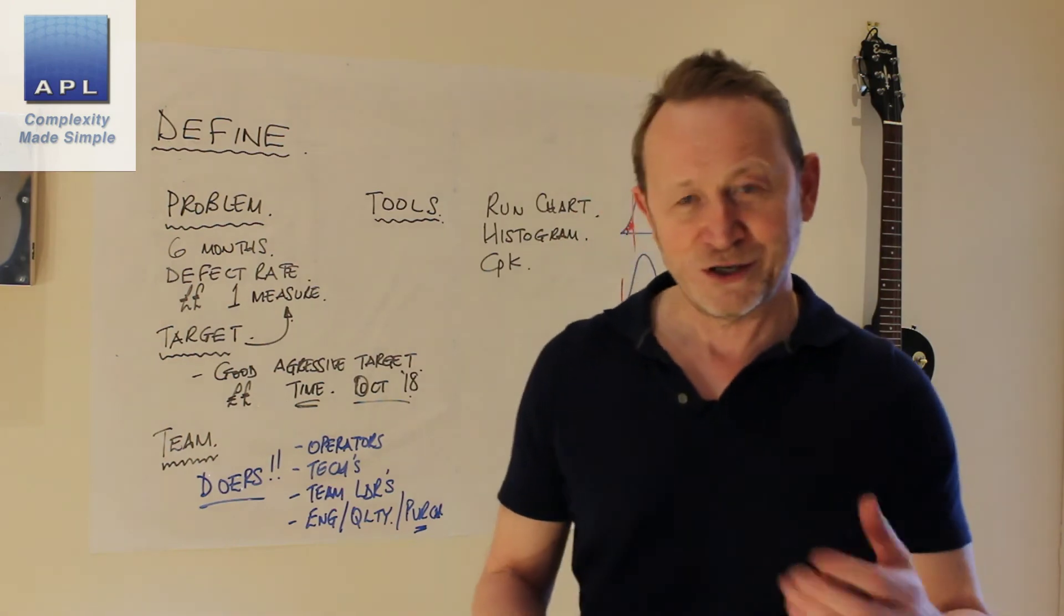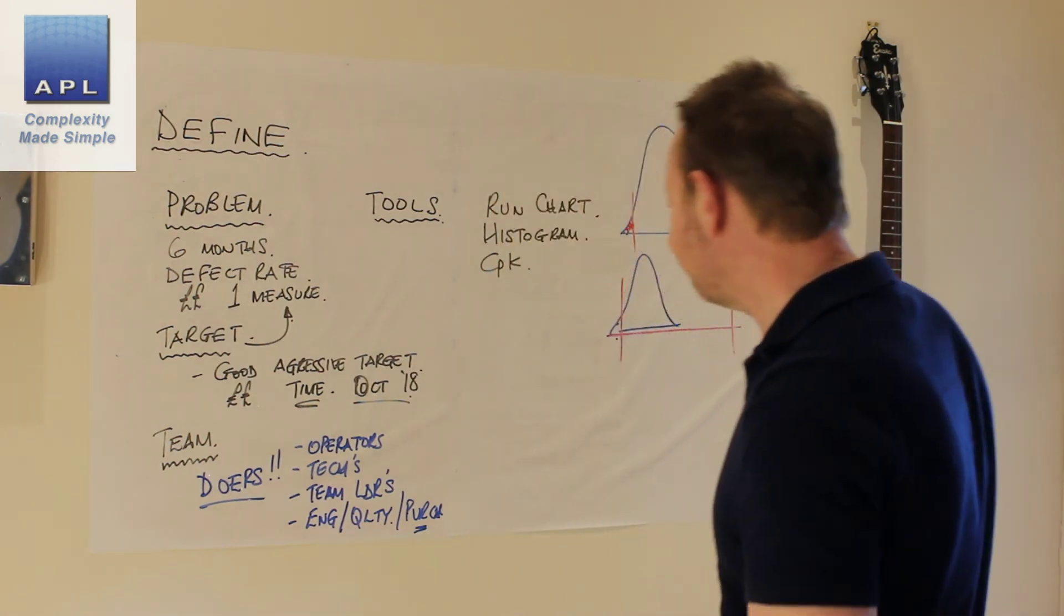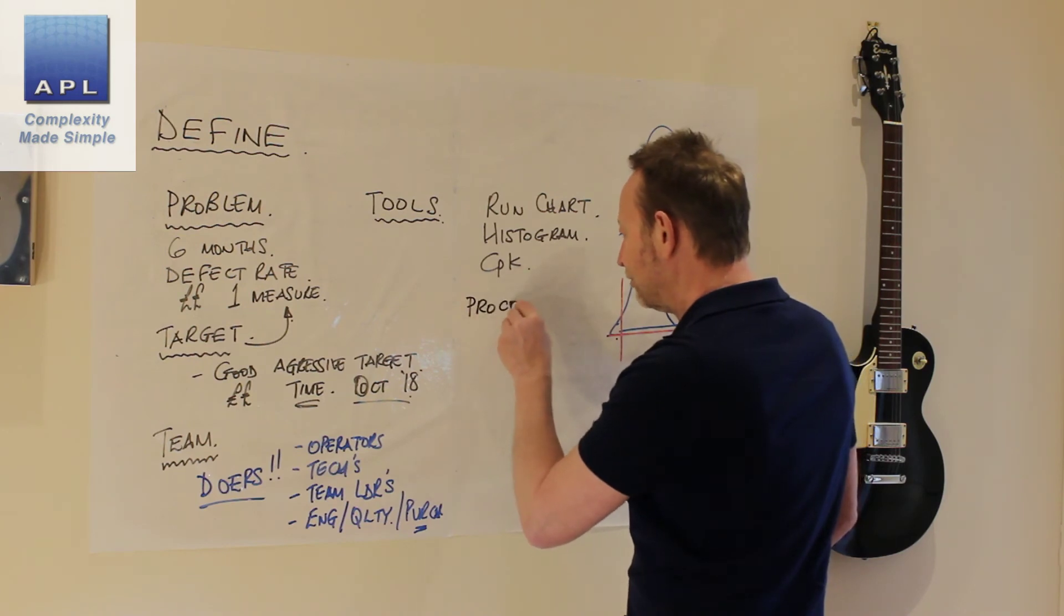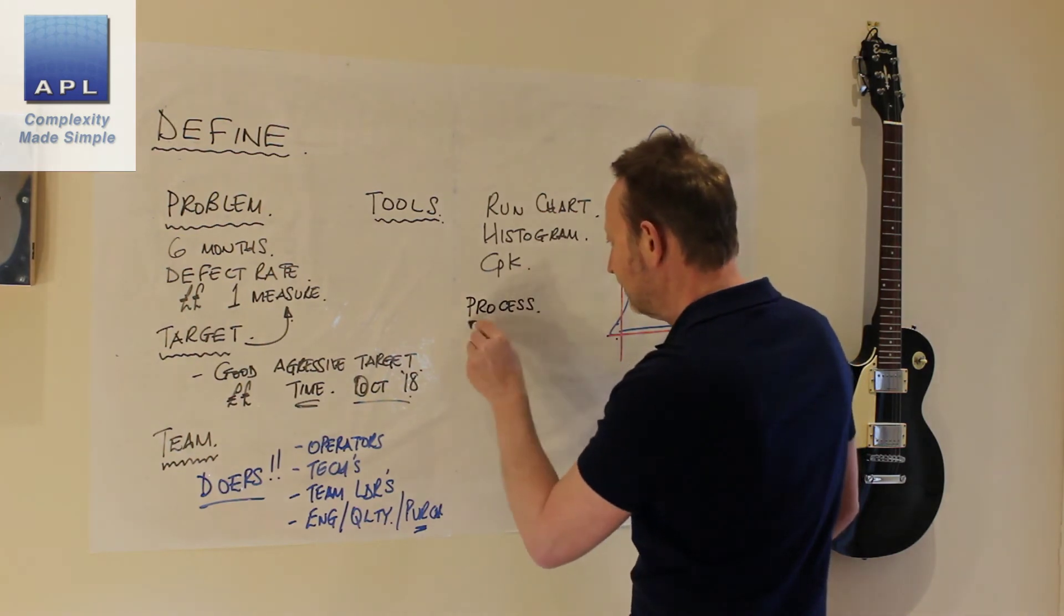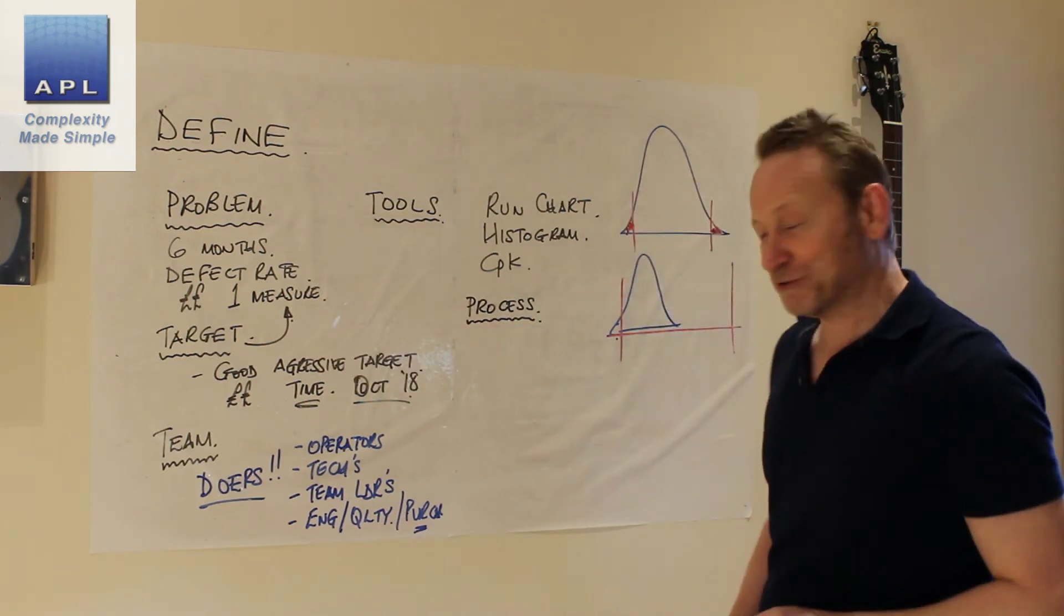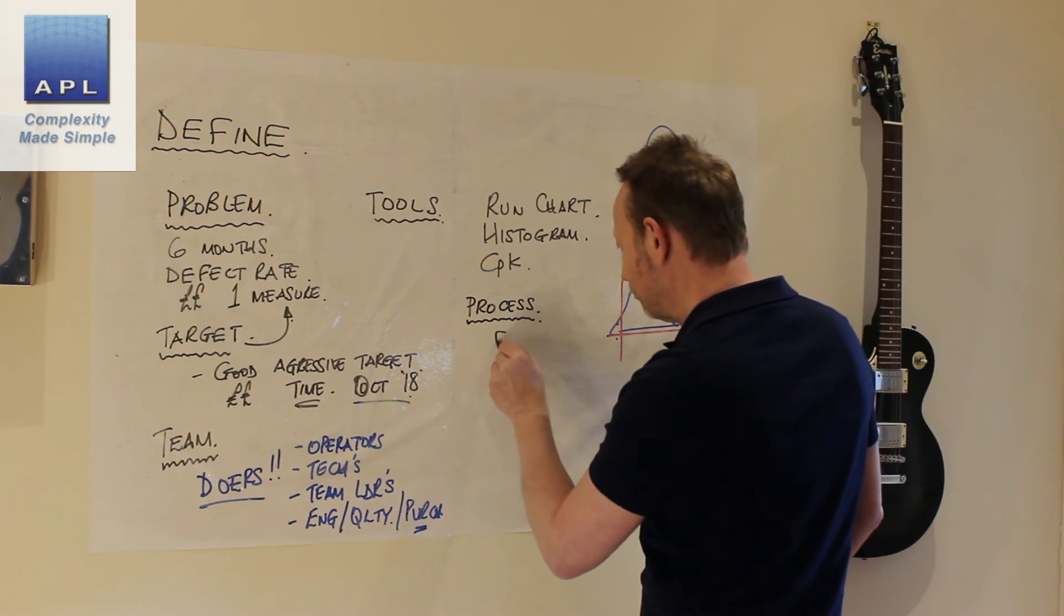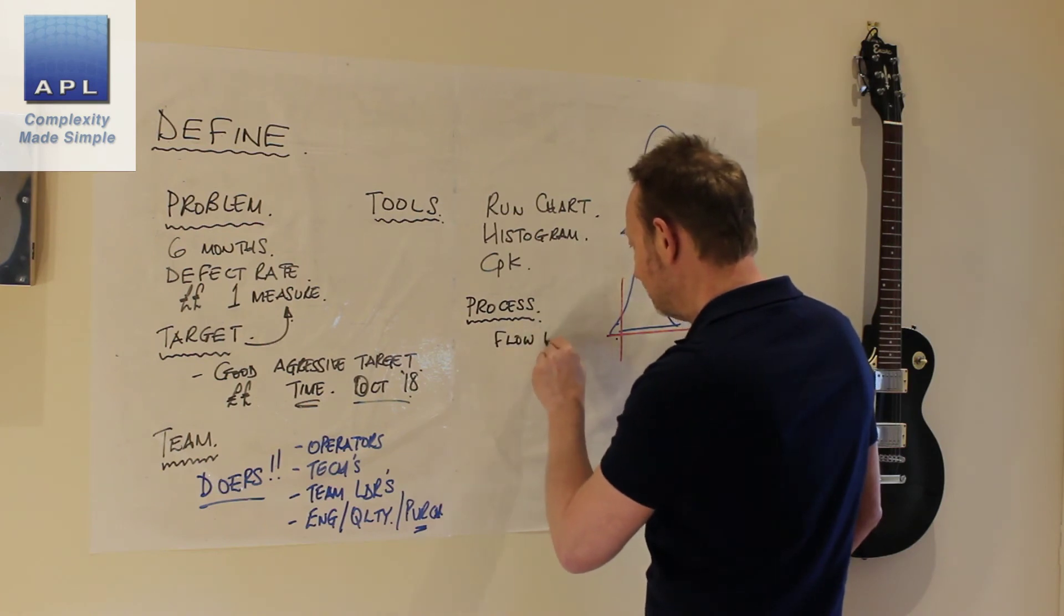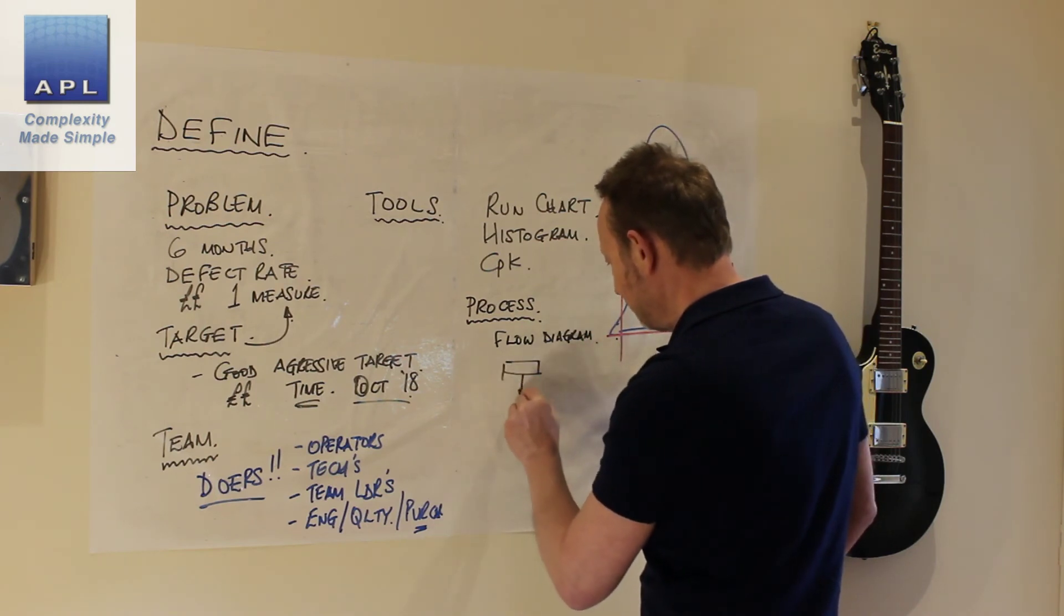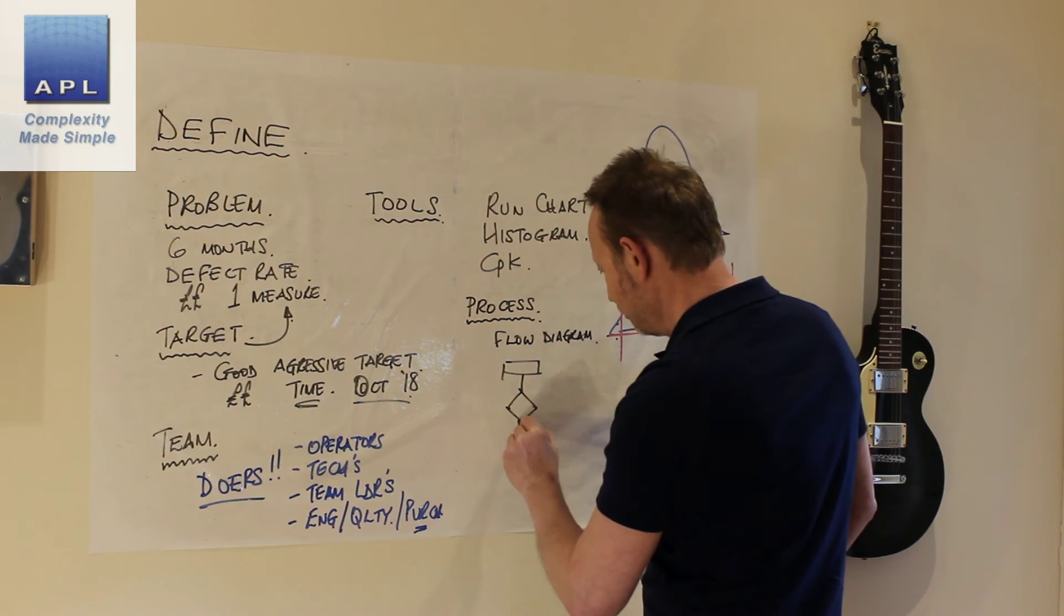What else would I want you to define? Well I want you to define the process. So what's the process that's letting you down? And the way you're going to do this of course is with a flow diagram.